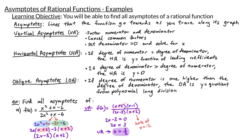Now let's think about horizontal or oblique asymptotes. In the numerator we have x squared — a degree 2 polynomial. In the denominator we have 2x squared — also degree 2. Since the degree of the numerator equals the degree of the denominator, we have a horizontal asymptote. The horizontal asymptote is y equals the fraction of the leading coefficients. The leading coefficient of the numerator is 1 and of the denominator is 2, so our horizontal asymptote is y equals 1 over 2.